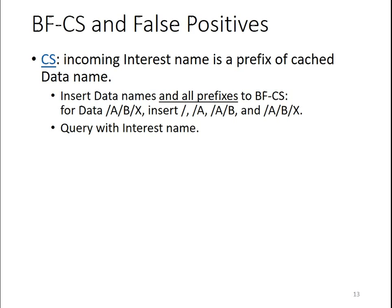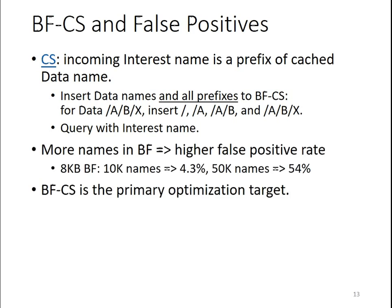A problem is that bloom filters have false positives, and the more names we put in, the higher the false positive rate. For example, with an 8-kilobyte bloom filter and 10,000 names, the false positive rate is 4.3% — acceptable. But with 50,000 names, the false positive rate goes up to 54%. The content store is the largest table, since an end host can cache a lot of data, so the primary optimization target is the CS bloom filter, BFCS.